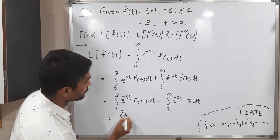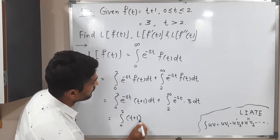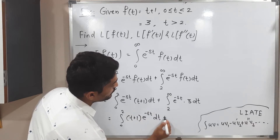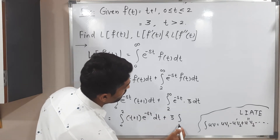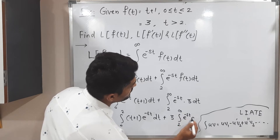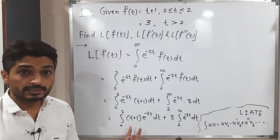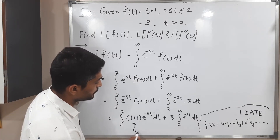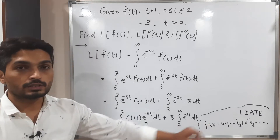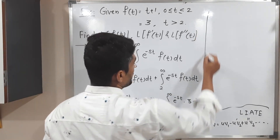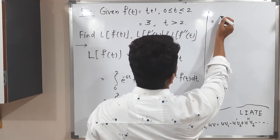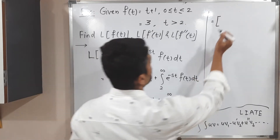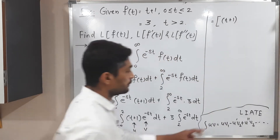So this is equal to: integration from 0 to 2 of (t plus 1) times e raised to minus s t dt, plus 3 times integration from 2 to infinity of e raised to minus s t dt. We have arranged the integrand properly where t plus 1 is our u (first function) and e raised to minus s t is our v (second function), so we can now apply the integration by parts formula.